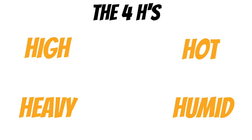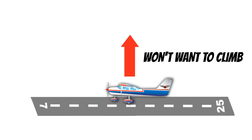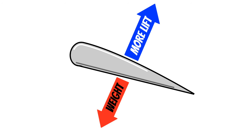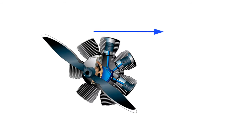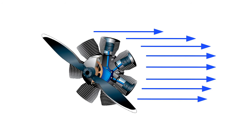Now let's briefly talk about the last of the four H's — heavy weight. This one's kind of common sense: if your airplane weighs more, it's going to be harder to get the airplane off the ground on a takeoff, and harder to stop on a landing. Your wings have to create more lift to offset that heavy weight, and the propeller has to create more thrust. You'll see in a minute how big of a difference the weight of your airplane makes for takeoff and landing distances.